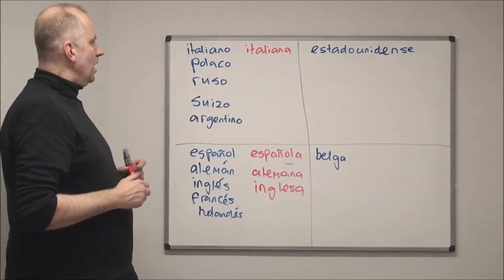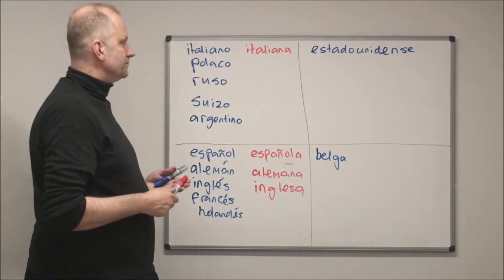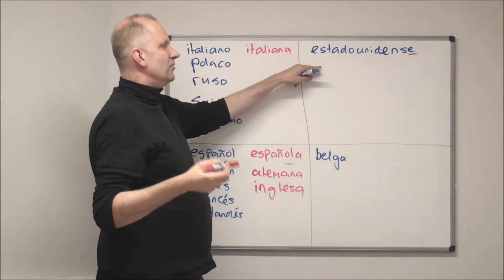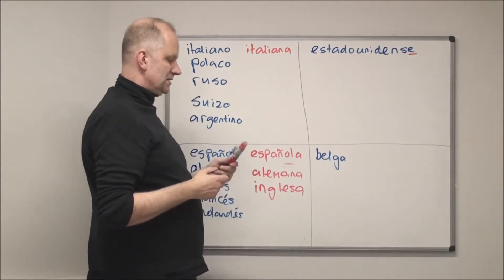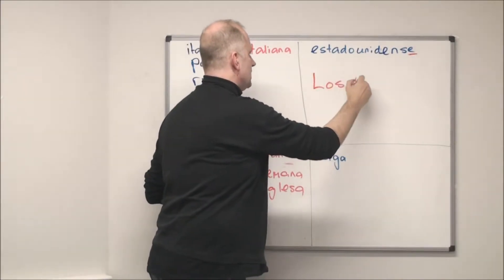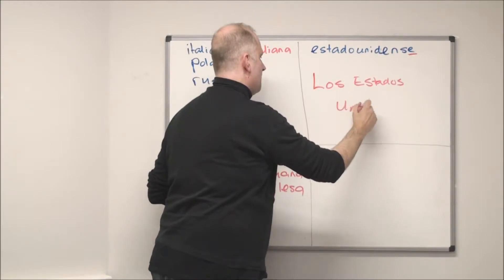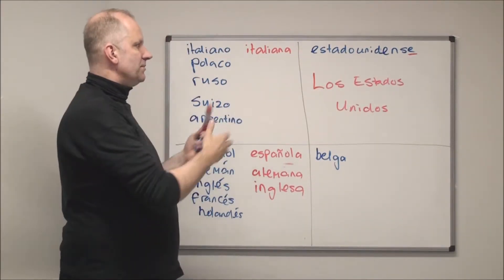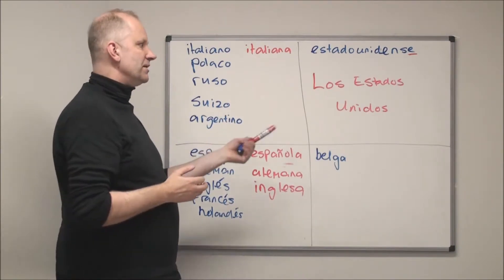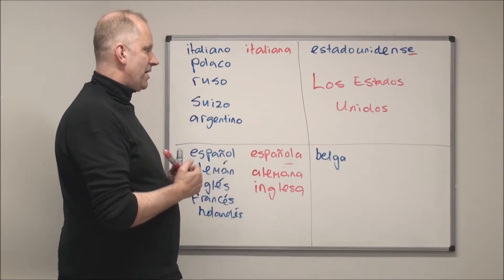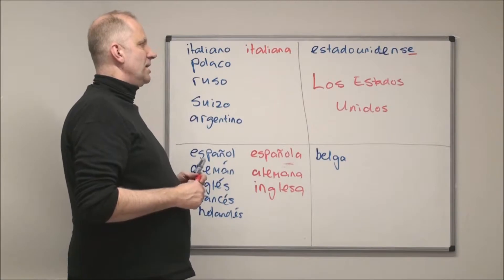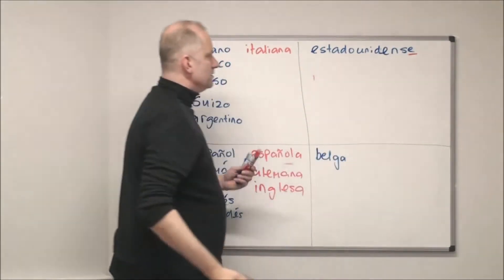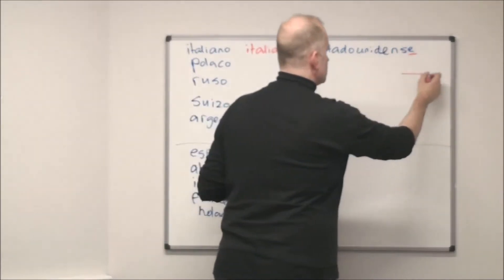Another group of adjectives is ones where the adjective ends in -e. An example is 'estadounidense', meaning someone from the United States. You can say 'americano/americana' but it's vague — it could describe someone from Canada, Mexico, or Colombia. So it's more accurate to say 'estadounidense'. For adjectives which end in -e in the masculine, the feminine form is the same.